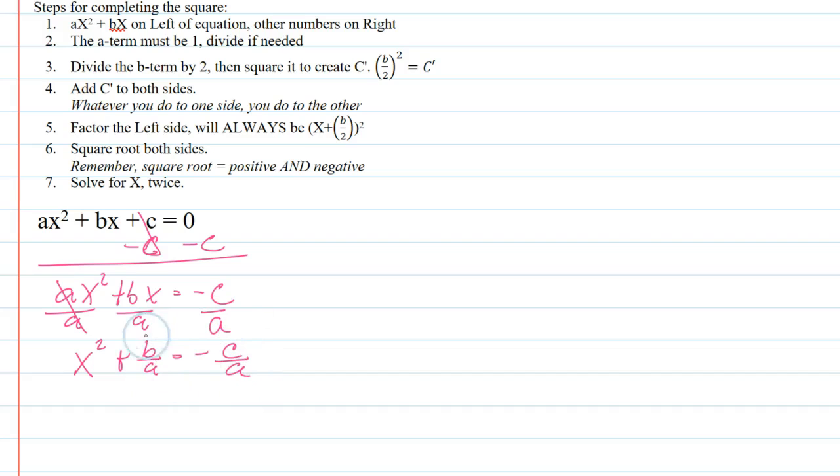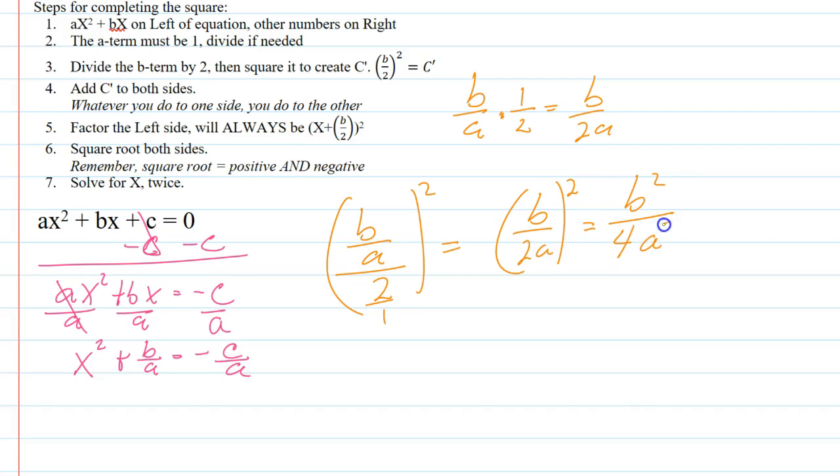Step number three, I need to take half that middle term and then square it. I'll do that as a side problem: (b/a) divided by 2, quantity squared. Now remember it's being divided over an imaginary one. So if I'm dividing a fraction by a fraction, I invert and multiply. What does that mean? It means b/a times 1/2. I inverted the one half or the two over one and I'm multiplying. That gives me b/2a. So that's going to give me (b/2a)² which gives me b² over 4a².